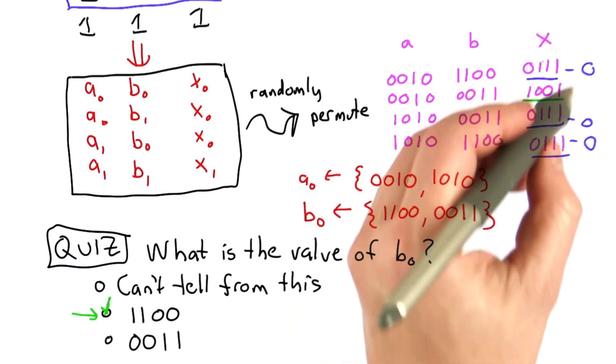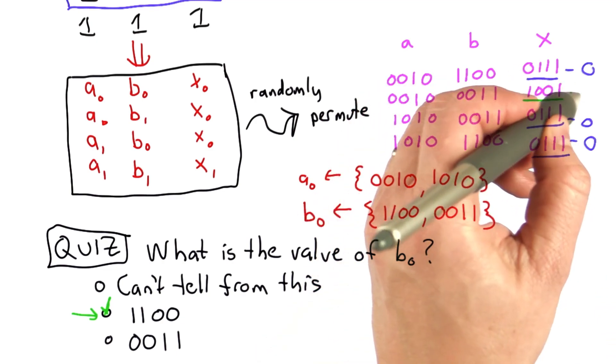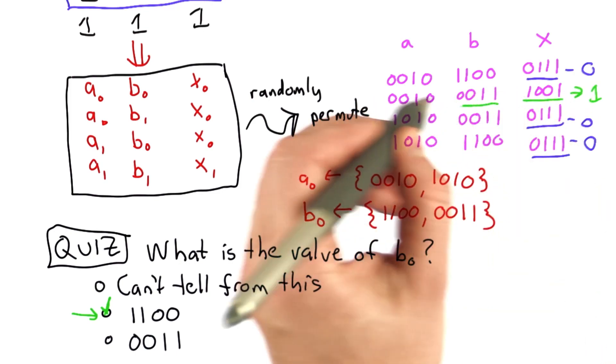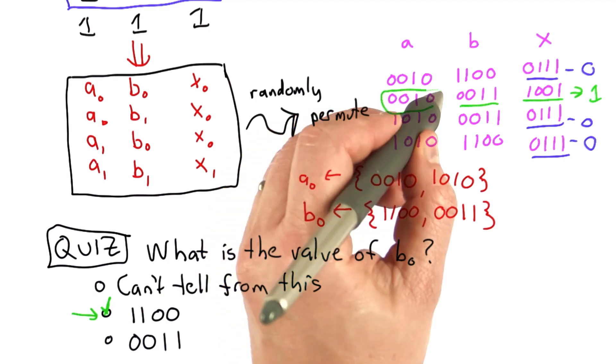And then there's 1 that has the value 1011, so that must correspond to the x value having the output 1. And that means the only way the output could be 1 is if both of these represent 1.